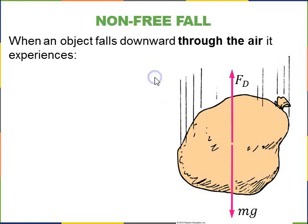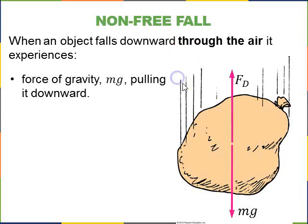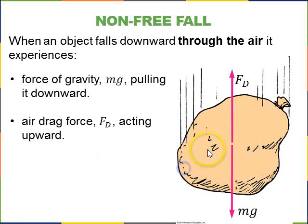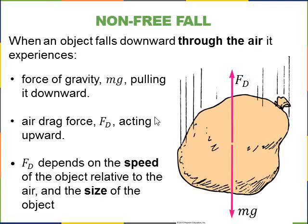Non-free fall is when an object moves downward through the air, it experiences both a force of gravity, which we'll be calling MG, pulling it downward, and an air drag force, F sub D, acting upward. F sub D depends on the speed of the object, and also the speed of the object relative to the air, and also the size and shape of the object.